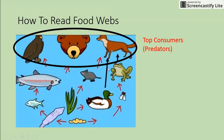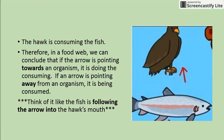Now let's look at how to read food webs. Flip to this part in your notes packet. Top consumers are at the top — they are predators. For example, the hawk is consuming the fish. The arrow points toward the organism that is doing the consuming. If an arrow points away from an organism, that organism is being consumed. Think of it like the fish following the arrow into the hawk's mouth.